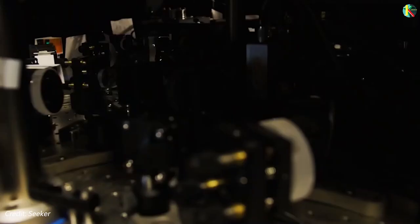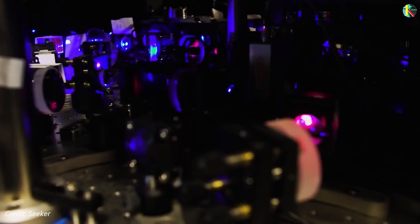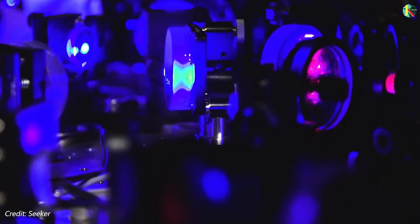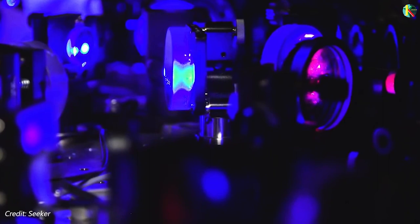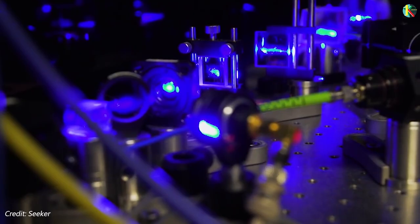For example, stability can be thought of as how precisely the duration of each tick matches every other tick. This is directly linked to the clock's mechanism precision. Compared to previous 1D clocks, the new 3D gas clock can reach the same level of precision more than 20 times faster due to the large amount of atoms and longer coherence times.